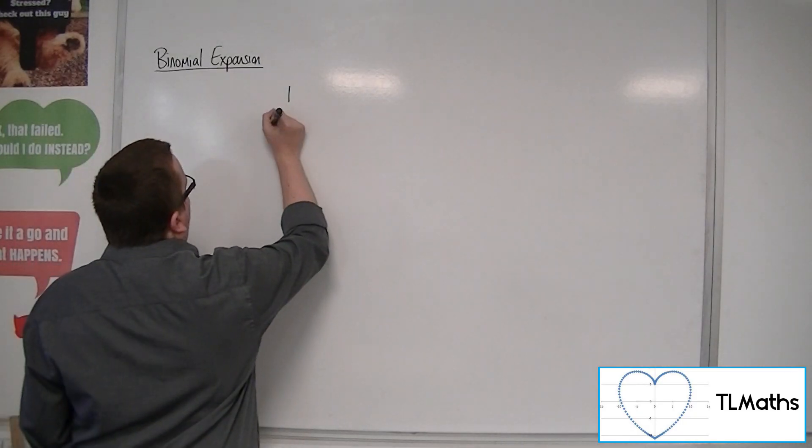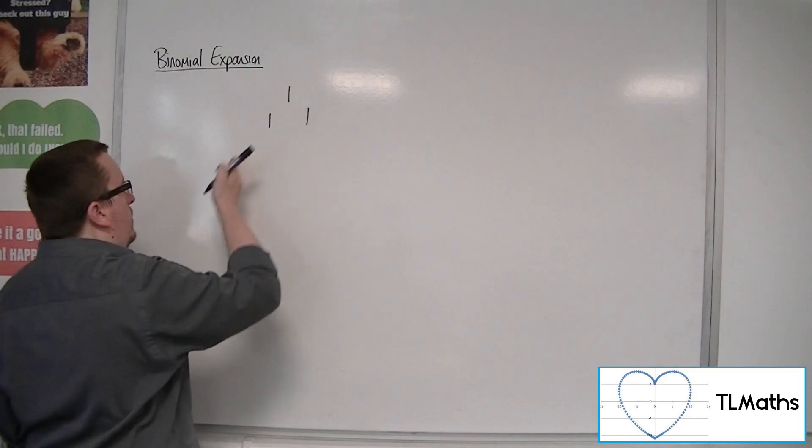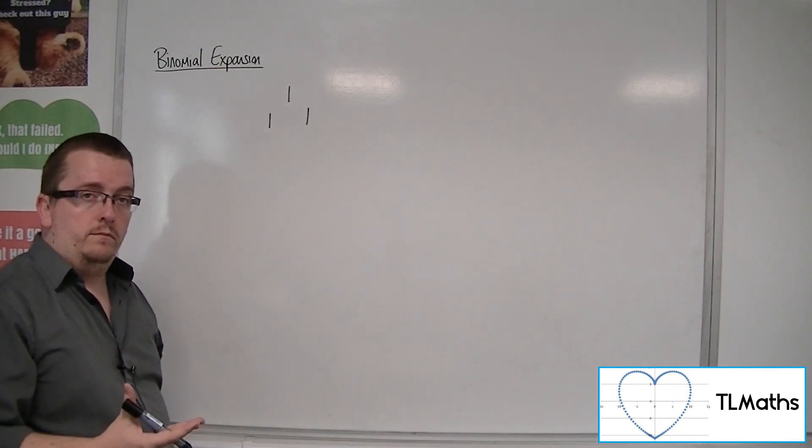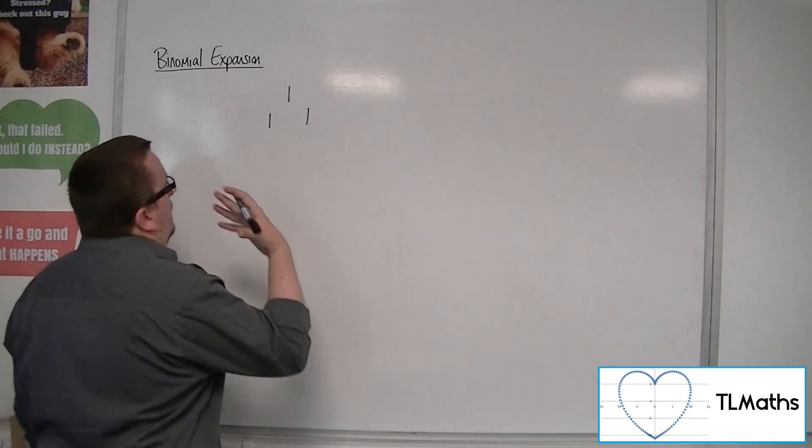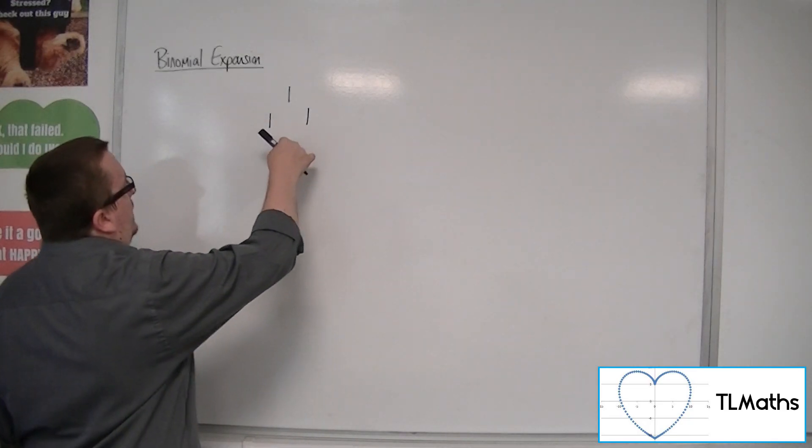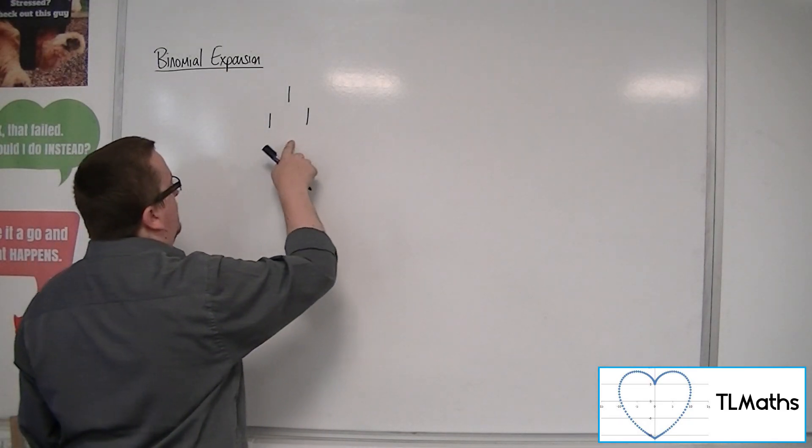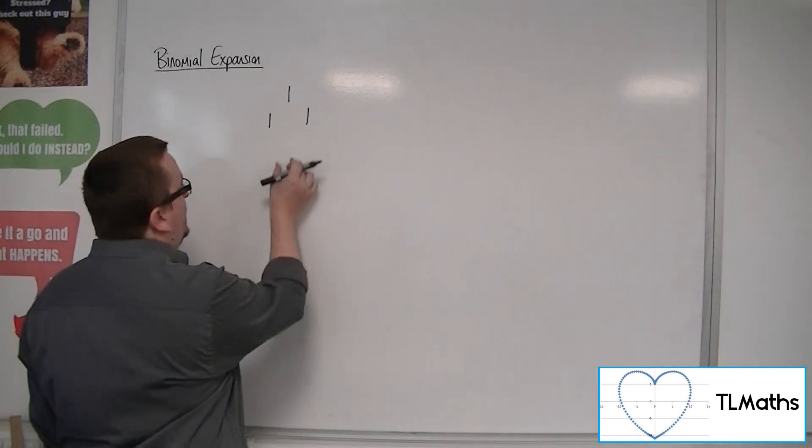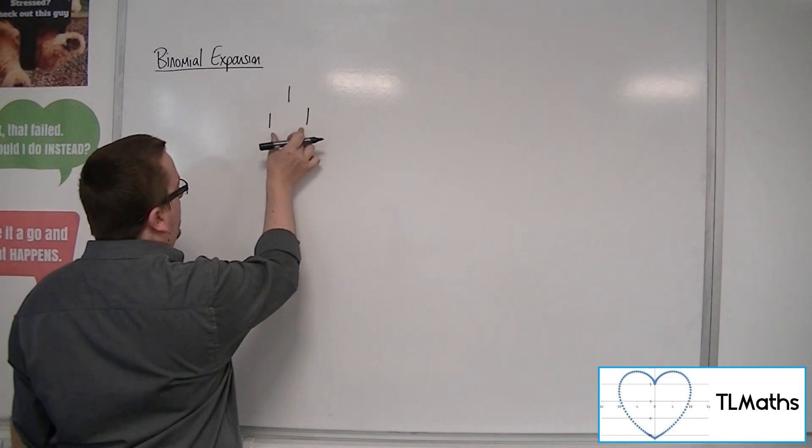The numbers on the outside of the pyramid are always 1. But any number that is below and between two other numbers is calculated by adding the two numbers above it.